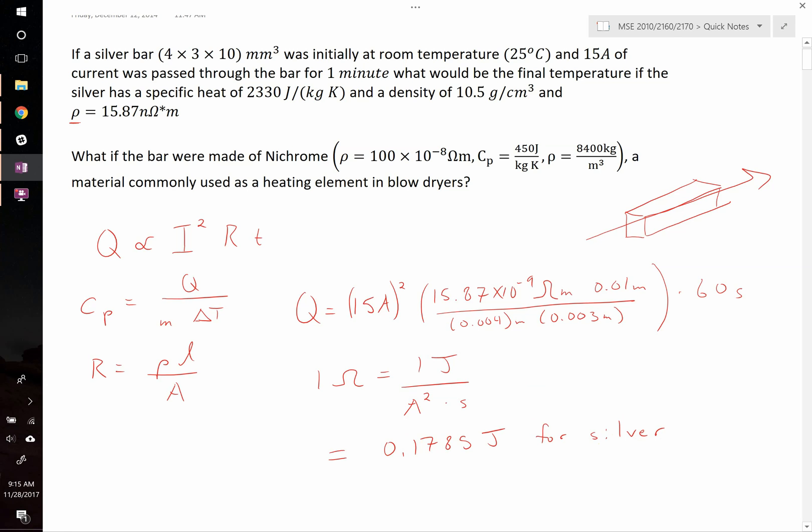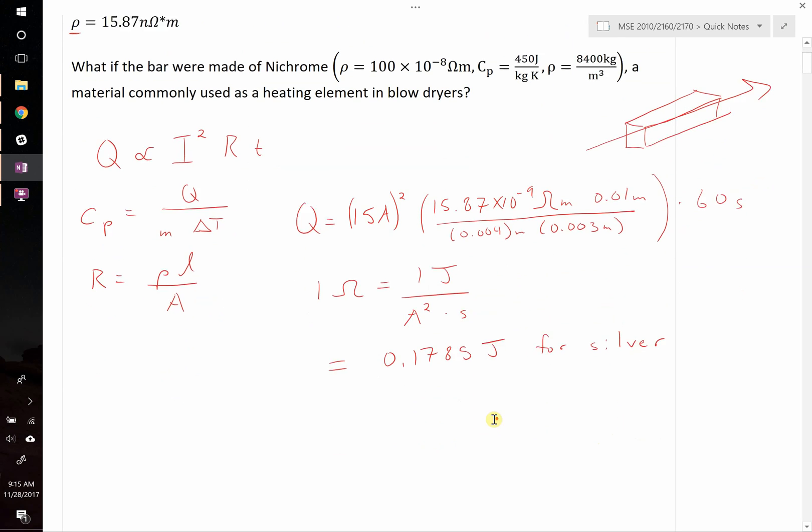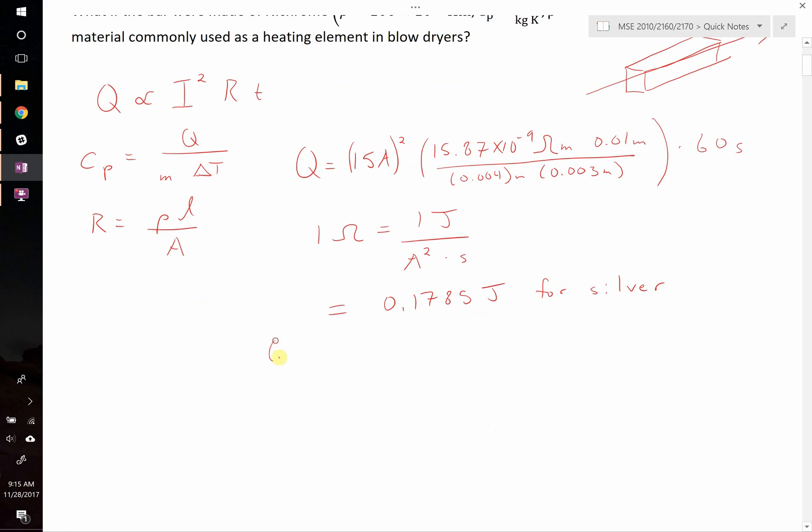Doing the same analysis, but now with nichrome, we can recalculate this. It's the same numbers as before, except we're going to change the resistivity. The resistivity is no longer 15.87 nano ohm meters. It's 100 times 10 to the negative 8 ohm meters. And therefore, we'll plug that in. And I find that it's equal to 11.25 joules.